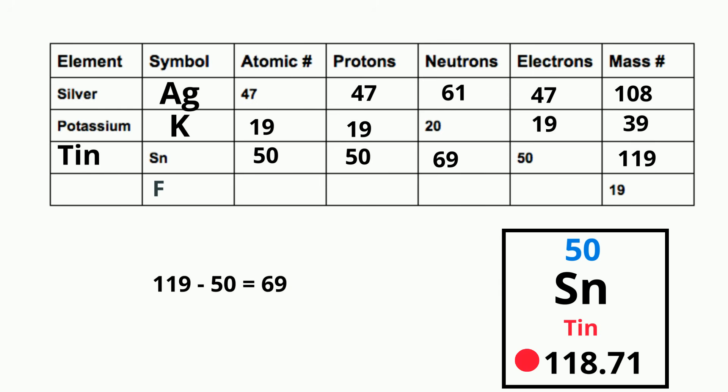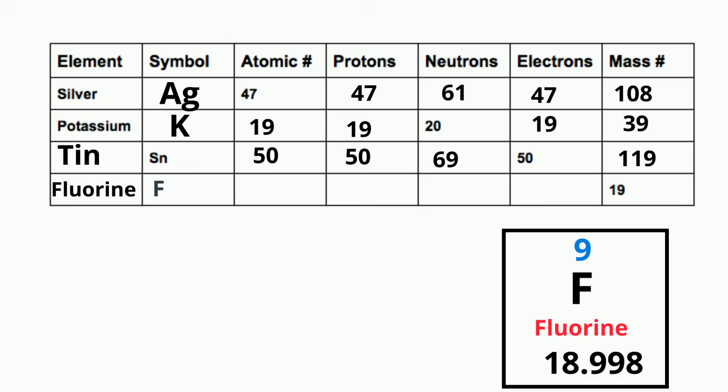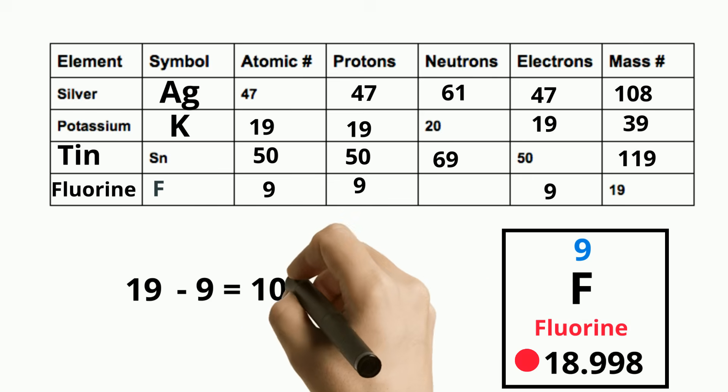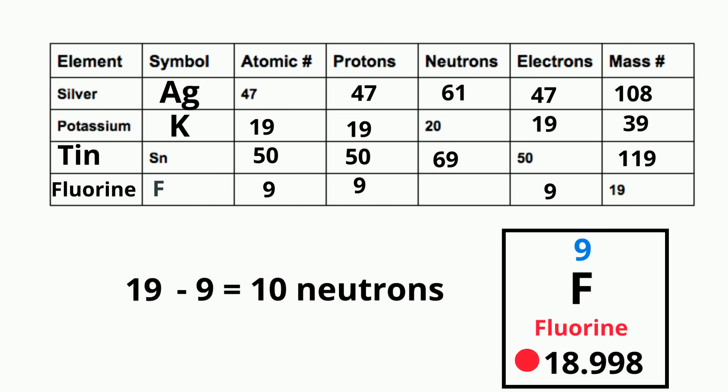And finally, we have fluorine. Fluorine has a symbol F, an atomic number of 9. That means it has 9 protons. Has a zero charge, so the electrons will be 9. It has a mass number of 19, because I round up to 19. And then 19 minus 9 gives you the number of neutrons, which is 10.